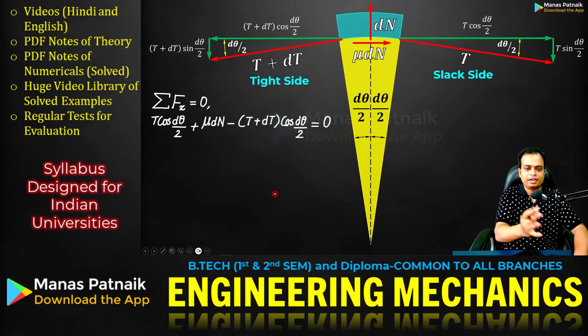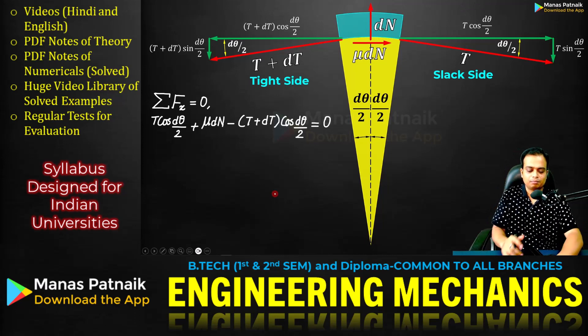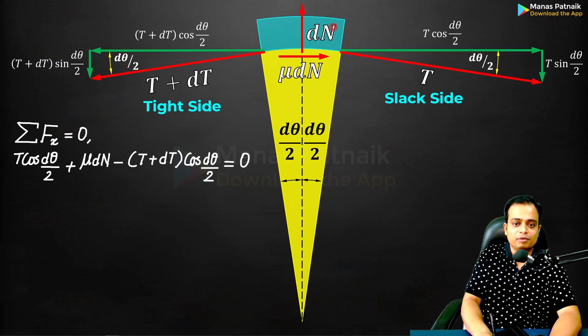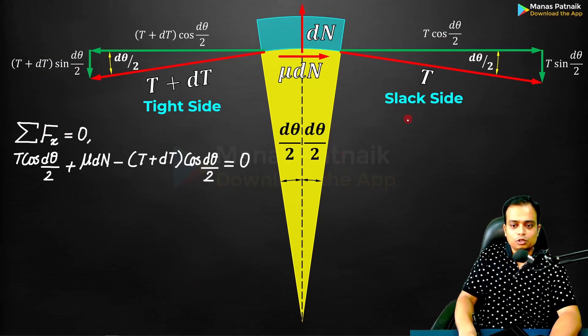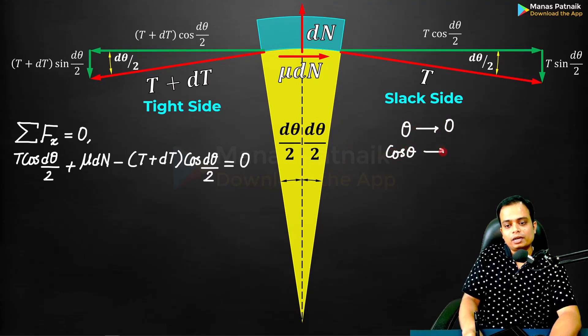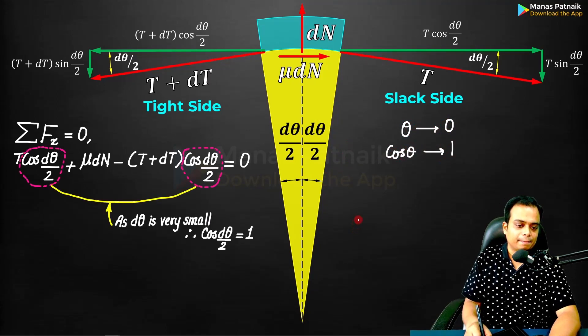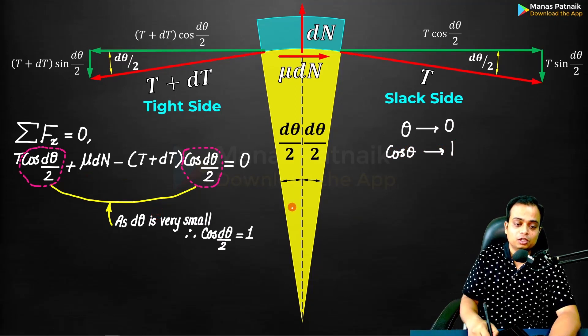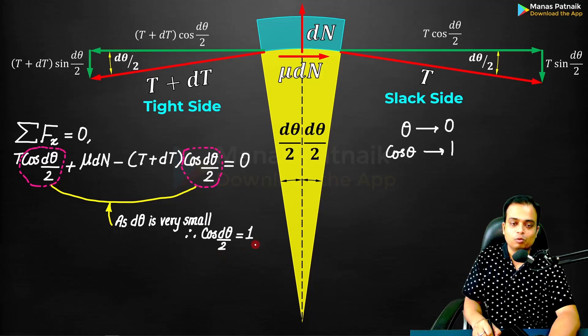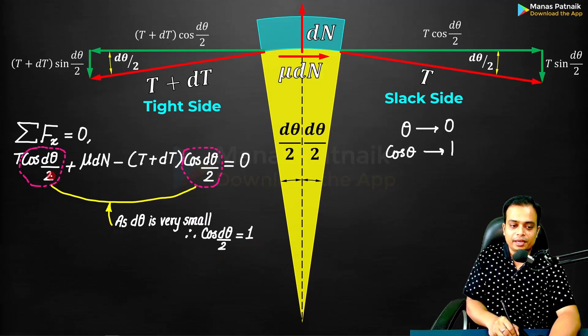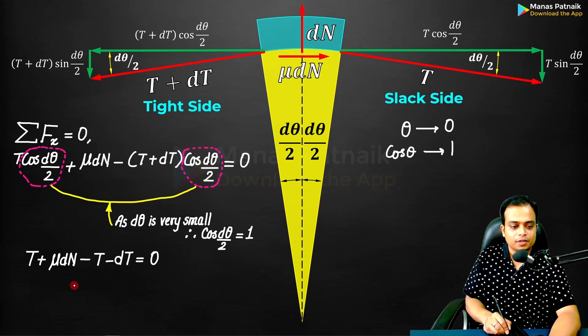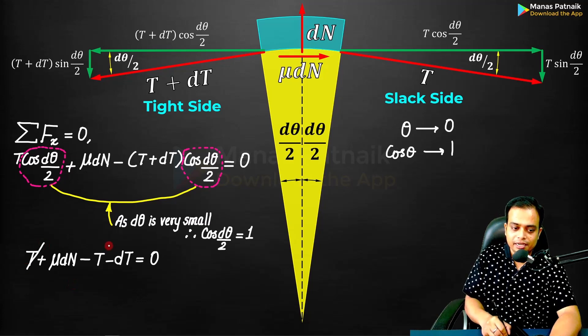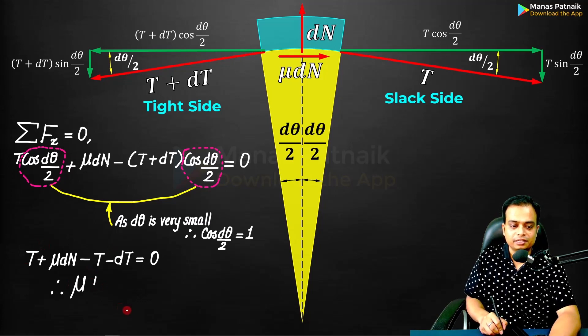The analysis is going to become very easy. This element is extremely small, so the angle is also very small. For small angles, when θ tends to 0, cos θ tends to 1. As dθ is very small, dθ/2 is even smaller, so cos(dθ/2) equals 1. Let me put 1 over here. The equation simplifies.